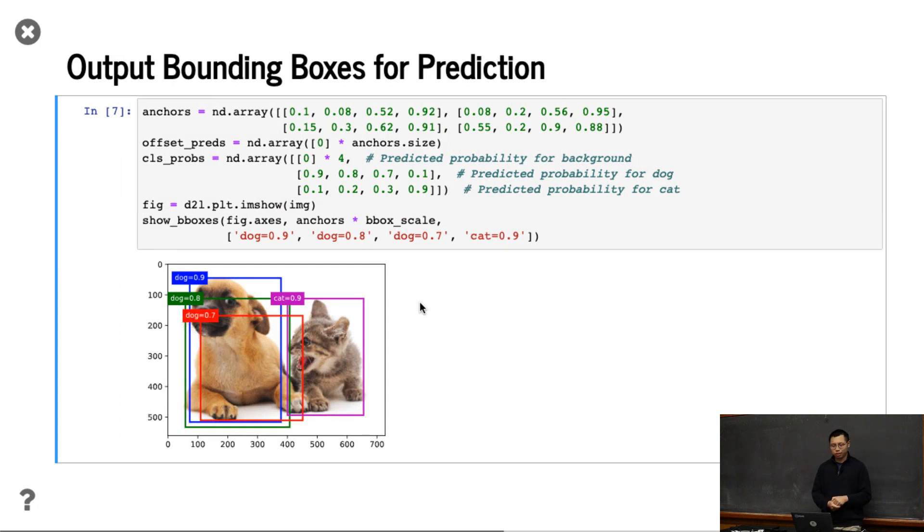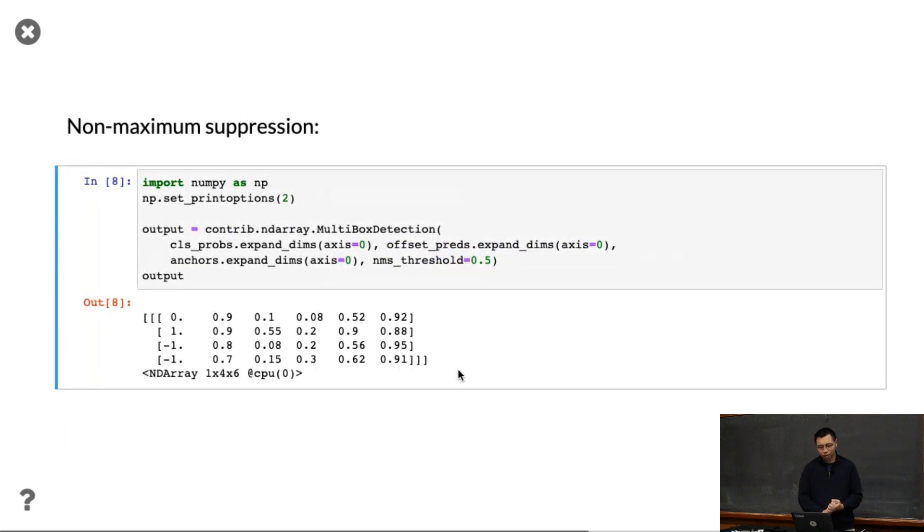So the other one is how to output. Here we assume we have multiple predictions. Before we mapped labels to anchor box. Now here we assume the aggregates already have predictions for each anchor box. Similar format - the first element is the predicting score, the confidence of how we contain the objects. Sorry, this is actually the bounding box, not the score. And the offset, I just make it zero for simplicity. And also the class probabilities. It's a softmax output. We're going to predict for each anchor box, for each class we have, what is the confidence score. Then we print all the things here. You can see that the dog has three almost similar predictions, the cat has one.